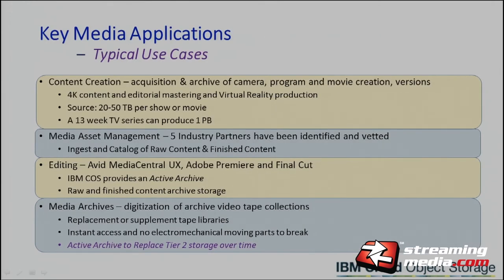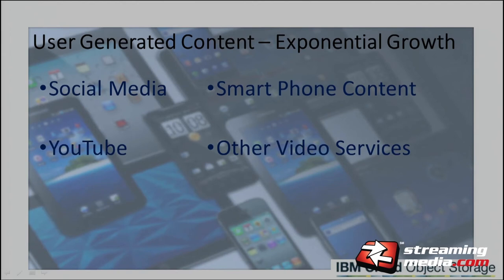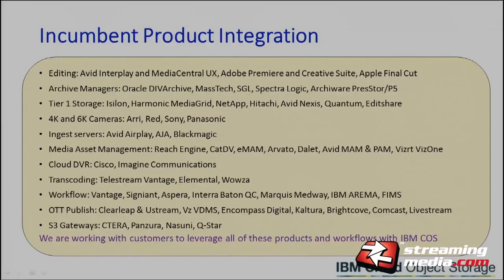Some more key applications: user-generated content is where we see the biggest growth. If you think about Hollywood, there might be 20,000 publishers — with user-generated content, there are billions of publishers. We work with a lot of your incumbent products: editing, archive management, tier one storage, ingest, and media asset management. We work with a lot of these companies and many more.